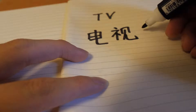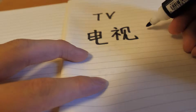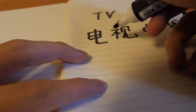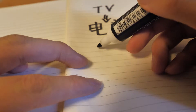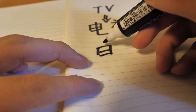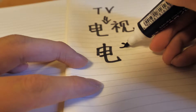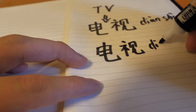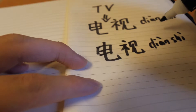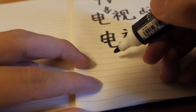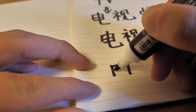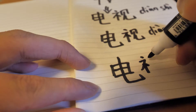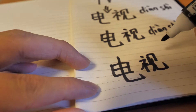TV in Chinese is 电视. Once again, TV in Chinese is 电视.